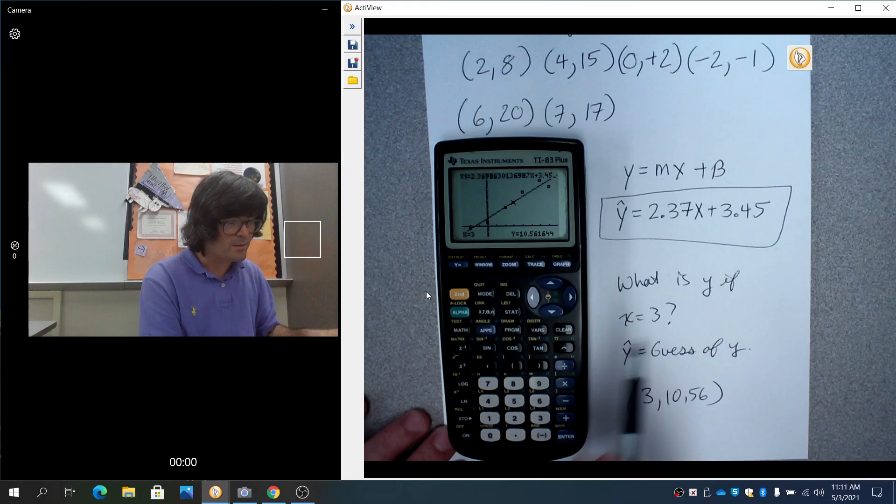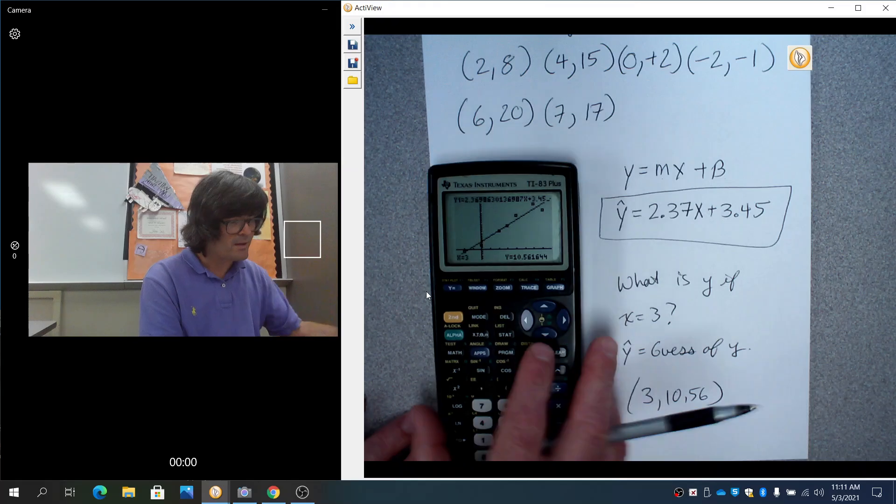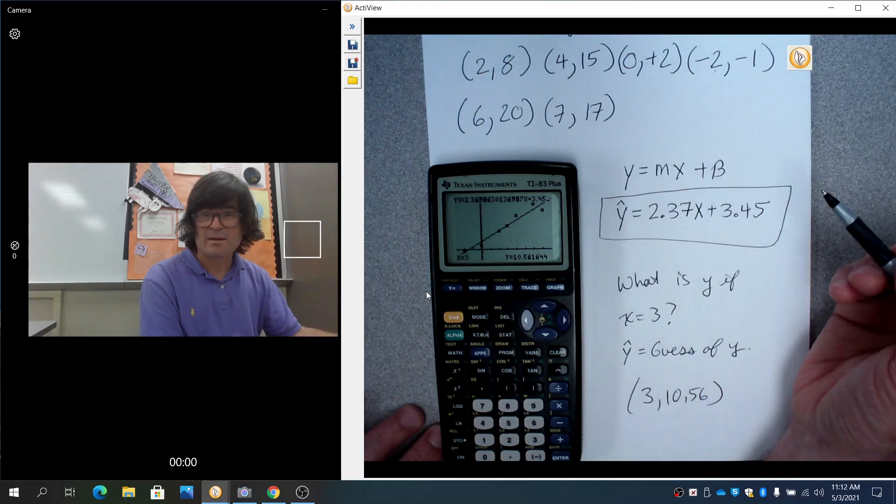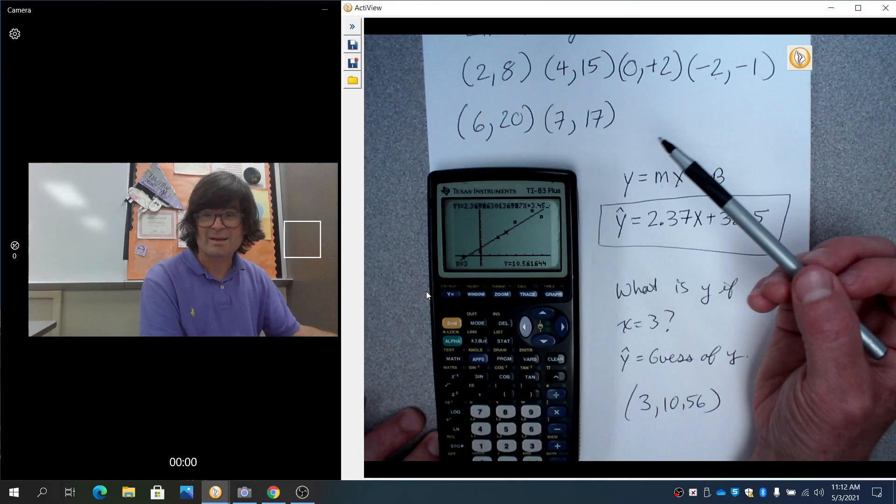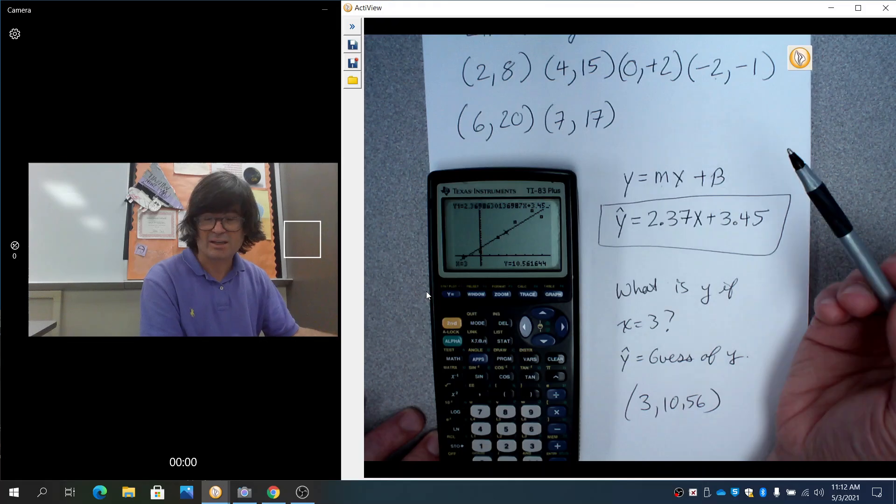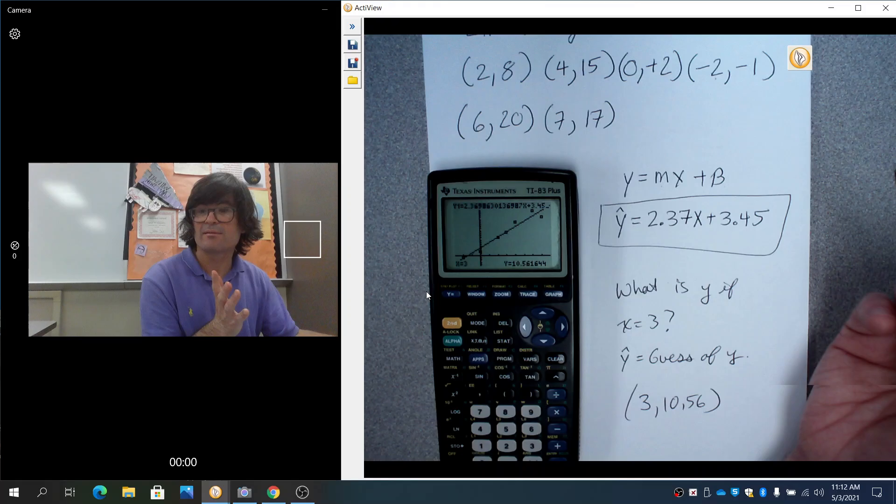One last thing that I need to tell you here: when you're making guesses, notice how the x started at negative 2 and ended at 7. So my interval on the x was negative 2 to 7. When you're making guesses for y based on an x, because my data only encompasses negative 2 to 7, I can only make guesses in that span.